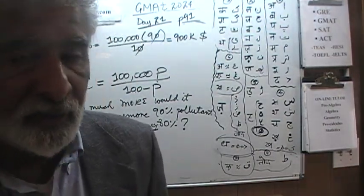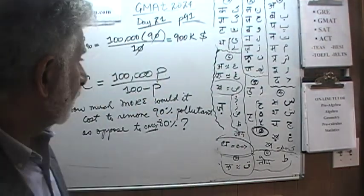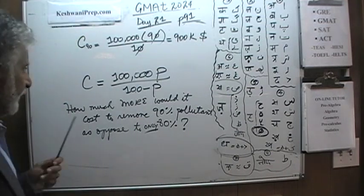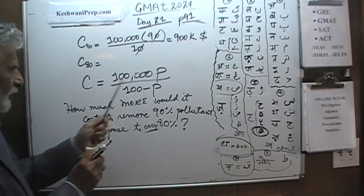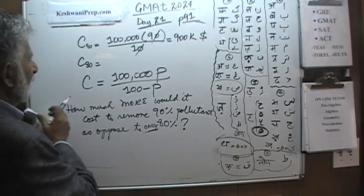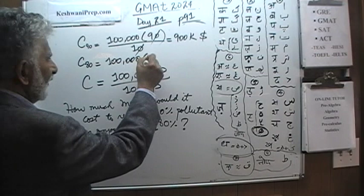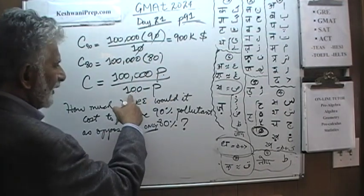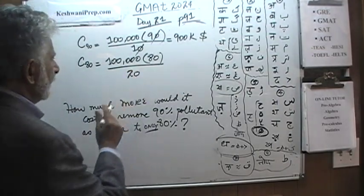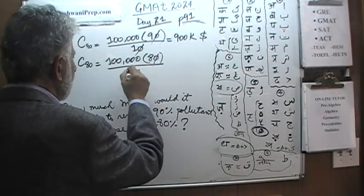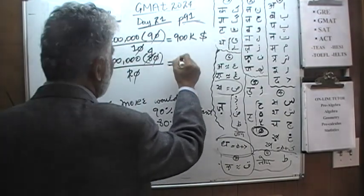Does that mean that to remove 80% of the pollutant it will cost us $800,000? Let's find out. Cost of removing 80% of the pollutant. 100,000 times this is 80. This is 80, this P right here. 100 minus P which is 20. There we go. Zero is going to drop out. Two is going to go with the eight. Four. And now we have four times 100,000. That's 400,000.